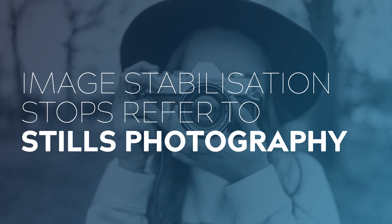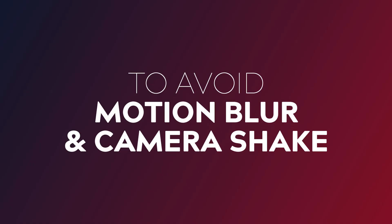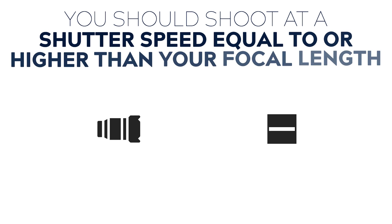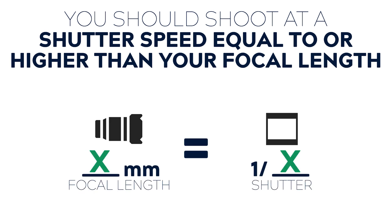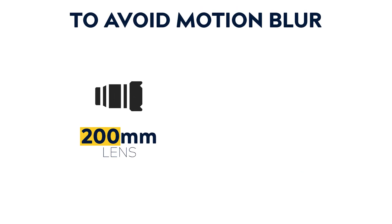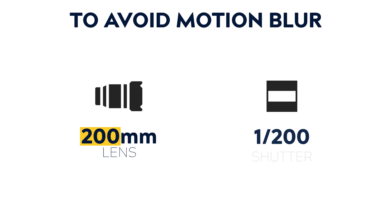It turns out a stop of image stabilization refers specifically to stills photography. There's a rule of thumb in stills photography that if you want to avoid motion blur and camera shake within your images, then you should shoot at a shutter speed that is equal or higher to your focal length. So say you're shooting on a 200mm lens — that means you should use a shutter speed of 1/200th or higher to avoid motion blur.